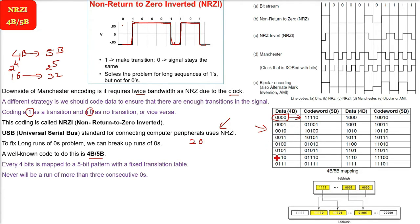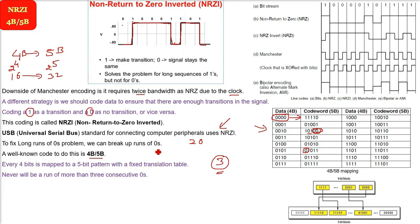What is the benefit? You will never have more than three consecutive zeros. Say you take two zeros at the end of one code word and one zero at the front of the next — if you combine them, there will be a maximum of three zeros. Any combination you take, there will never be a run of more than three consecutive zeros. This is how we fix the long runs of zeros.